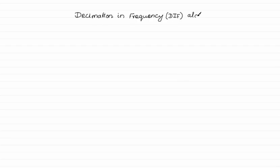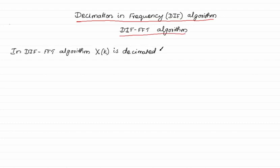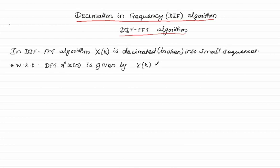Decimation in Frequency Algorithm, or DAF FFT algorithm. In the DAF FFT algorithm, X of K is decimated into small sequences. We know that the DFT of x of N is given by X of K. Before applying decimation to X of K, we have to rearrange X of K into an appropriate form.